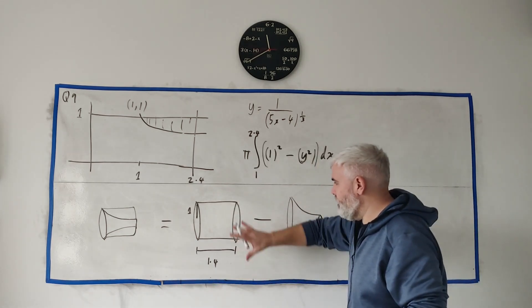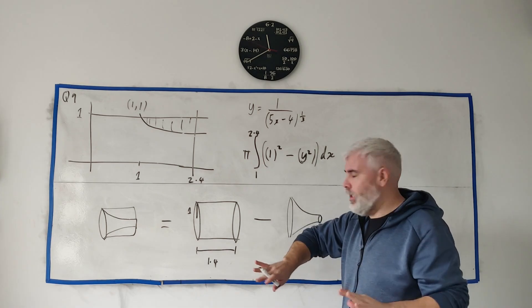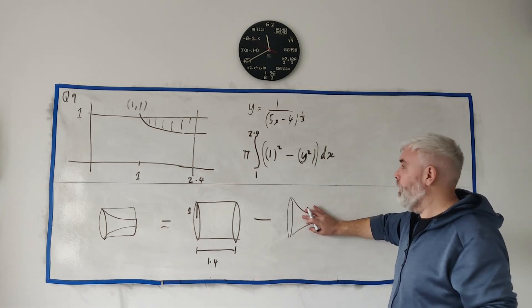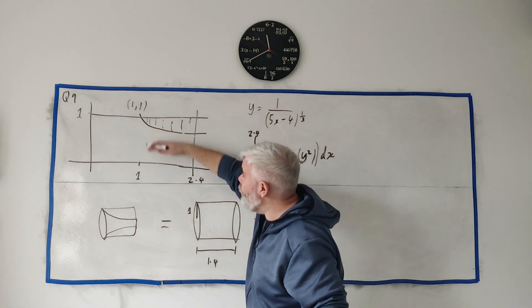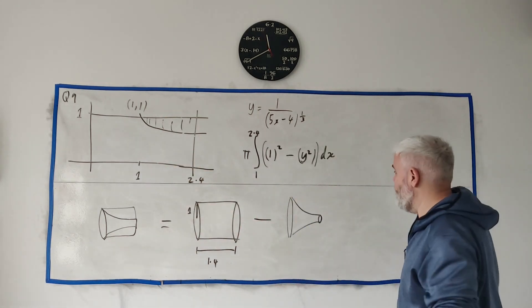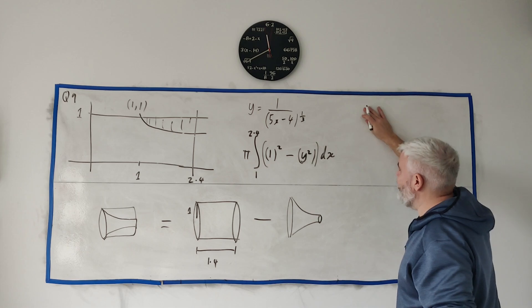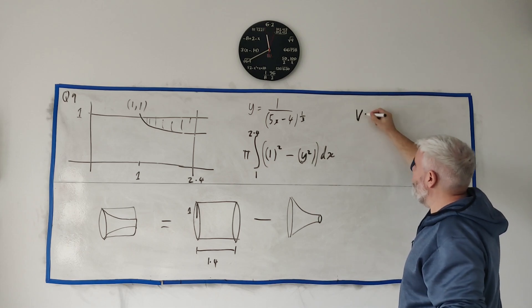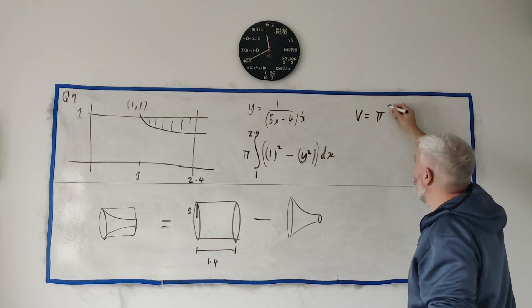So how I expect a lot of students to do it is find this volume separately on its own. So let's concentrate on this volume, and what this volume is is underneath the curve rotated, which is also a question you might see.